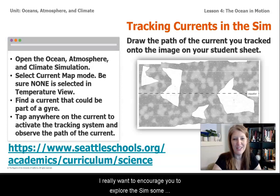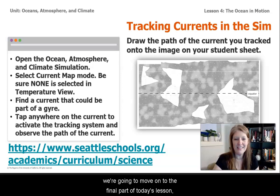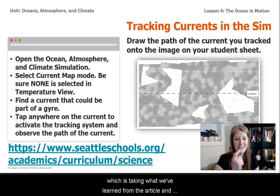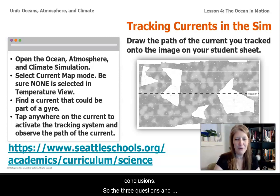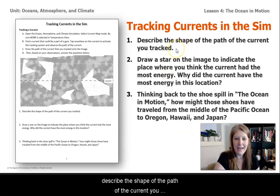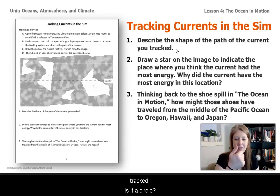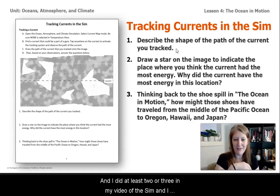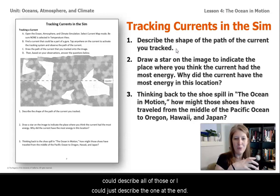I really want to encourage you to explore the sim some more on your own. But for this video, we're going to move on to the final part of today's lesson, which is taking what we've learned from the article and from our sim exploration and coming up with a few conclusions. The three questions I'd like for you to answer: number one, describe the shape of the path of the current you tracked — is it a circle, is it an S shape? I did at least two or three in my video of the sim and I could describe all of those, or I could just describe the one at the end.